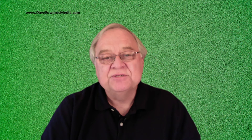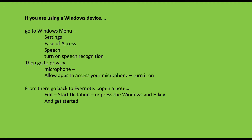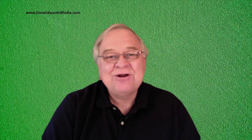If you're using a Windows device, go to the Windows menu, Settings, Ease of Access, Speech, and then turn on Speech Recognition. Then go to Privacy, click on Microphone, and allow the apps to access your microphone — so turn it on. From there, go back to Evernote, open a note, hit Edit, Start Dictation, or press the Windows and H key, and then you get started.